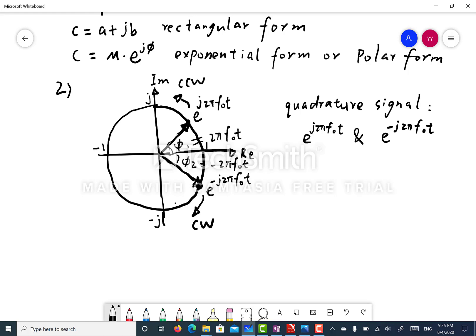With time increasing, the larger phi 1 becomes and the more it moves. For e to the minus j 2 pi f0 t.